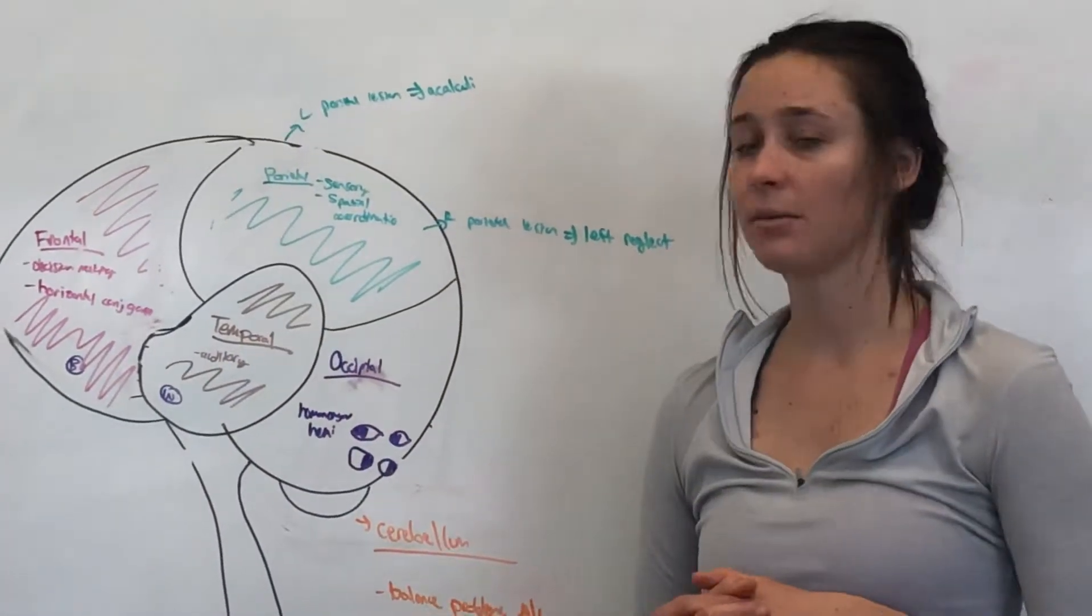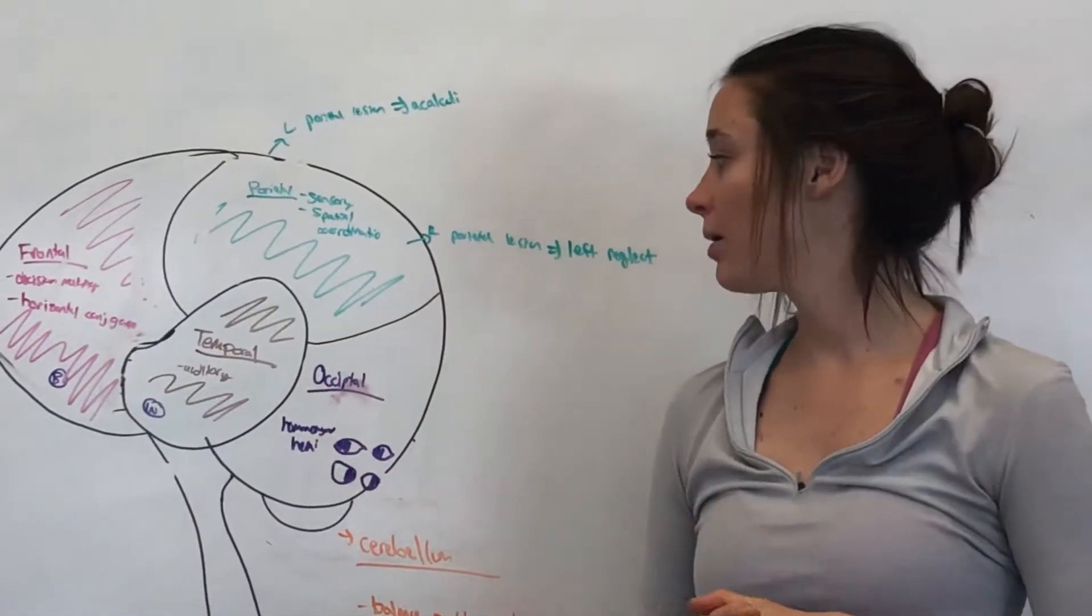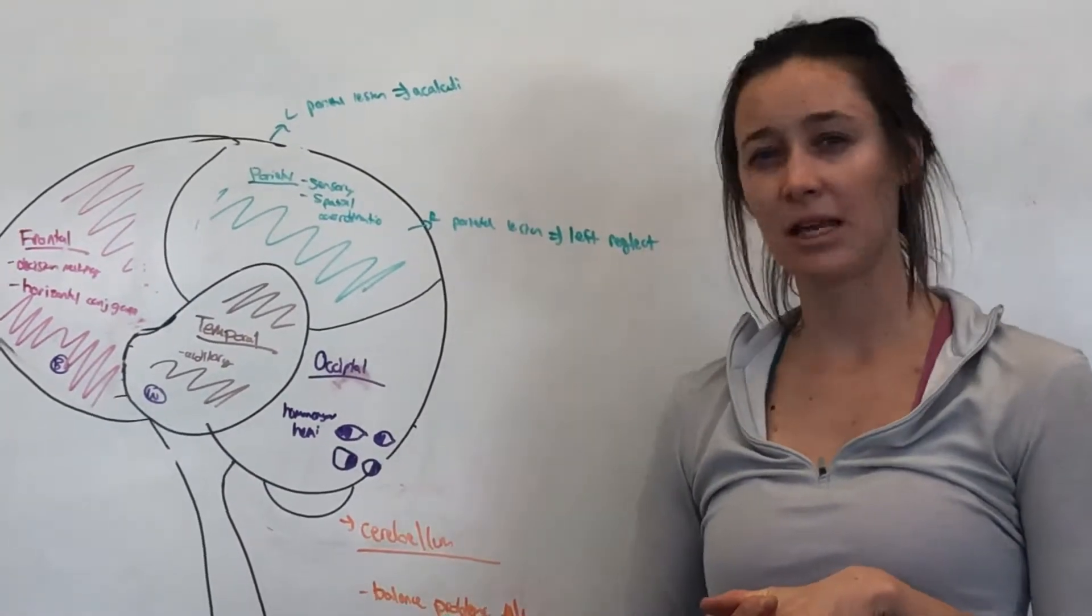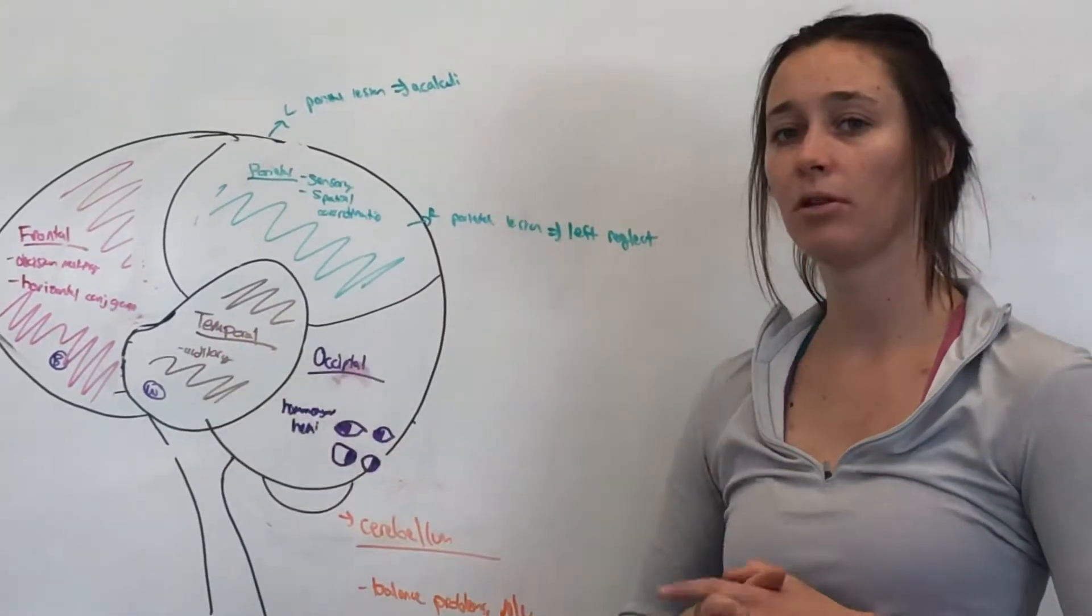Moving on to temporal lobe, this is going to be our auditory area. So if you have problems with hearing or anything like that, ringing in the ears, kind of start to think about a temporal lobe problem.